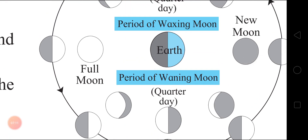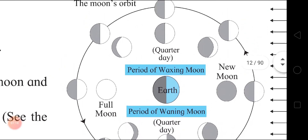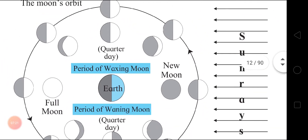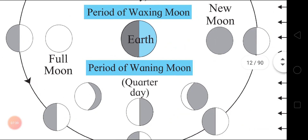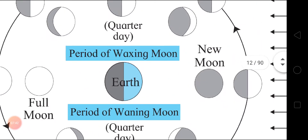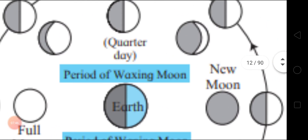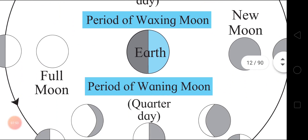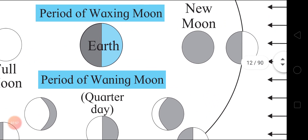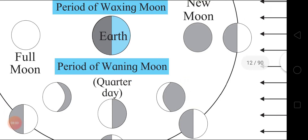The meaning of faces of the moon is the changing shapes of the illuminated part of the moon as seen from the Earth. We studied three faces of the moon: full moon day, new moon day, and quarters day. From new moon to full moon is the period of waxing moon, and from full moon to new moon is the period of waning moon.